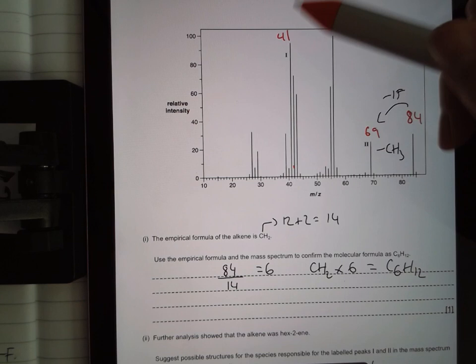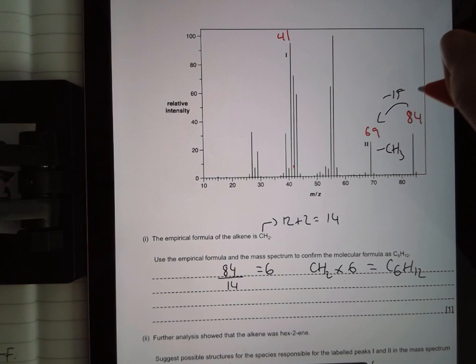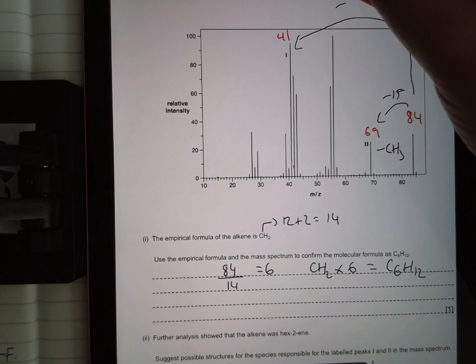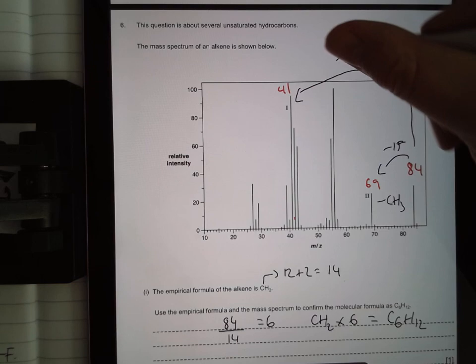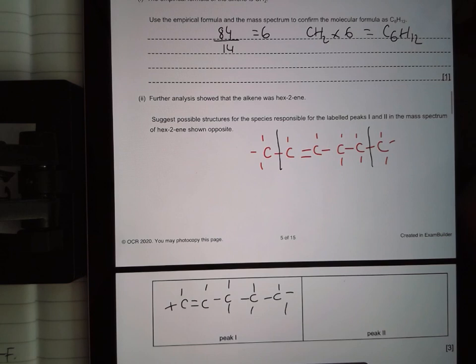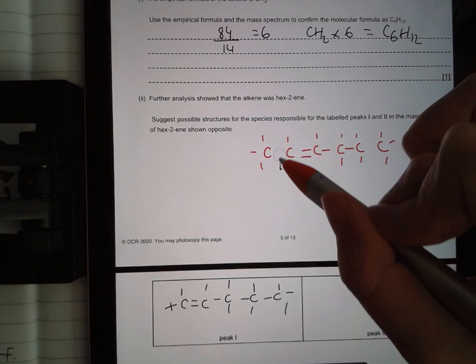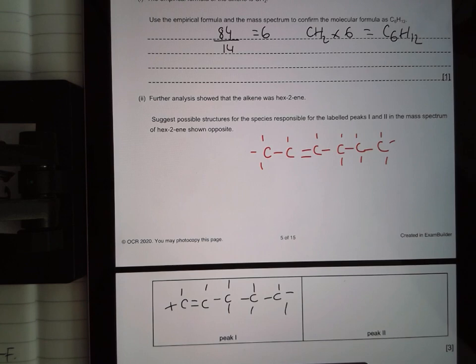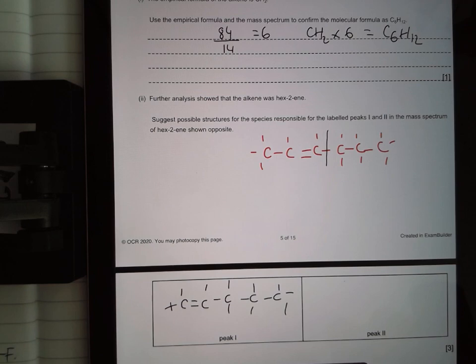For peak 1, I've got a peak at 41. To get from 84 back to 41, I must be losing 43. So I'm losing 43. I've seen that number loads of times already today. If I'm losing 43, I'm losing a C3H7. So I'm coming back here and I need to lose a C3H7. To do that, I am breaking this bond right here, and I'm losing my C3H7.